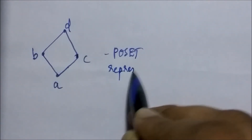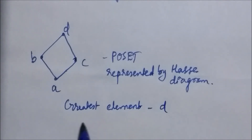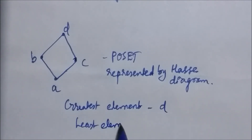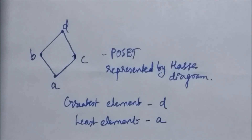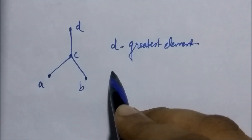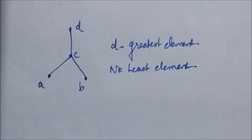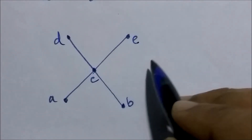Here is another question: this is a partially ordered set represented using a Hasse diagram — find the greatest and least element. The greatest element is d because every element a, b, c, and d itself is related to d. The least element is a because a is related to every element: a is related to a, b, c, and d. In the next Hasse diagram, d is the greatest element but there is no least element. In the final Hasse diagram there is neither a least nor a greatest element.